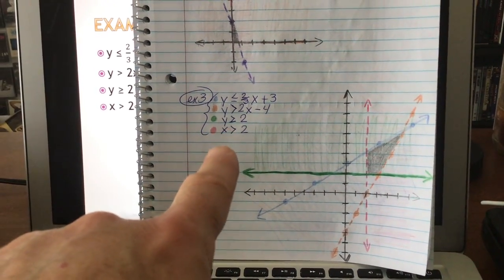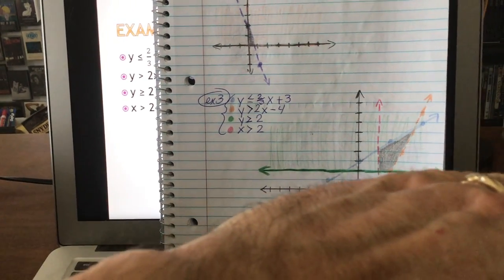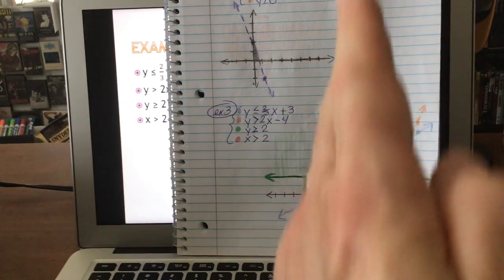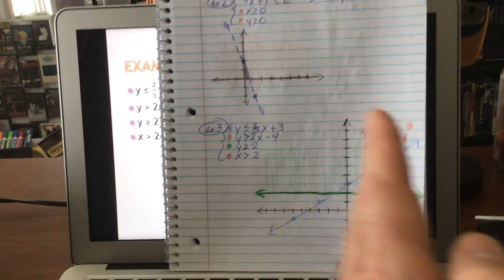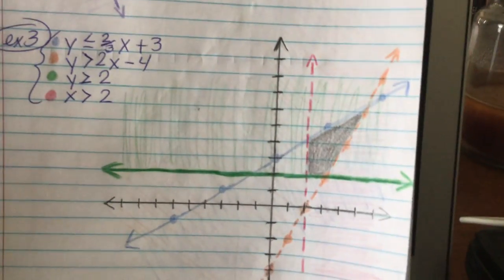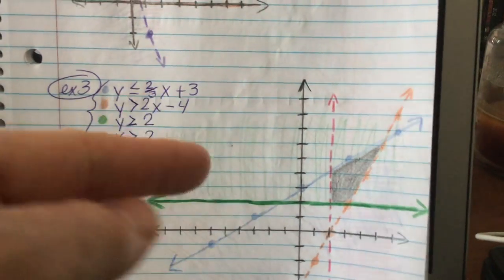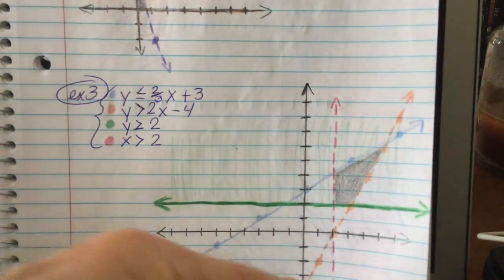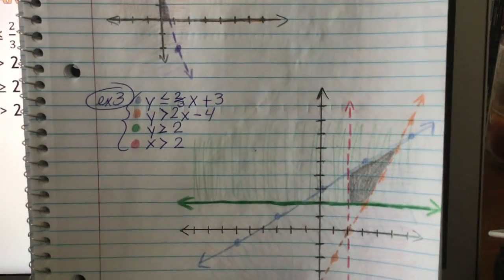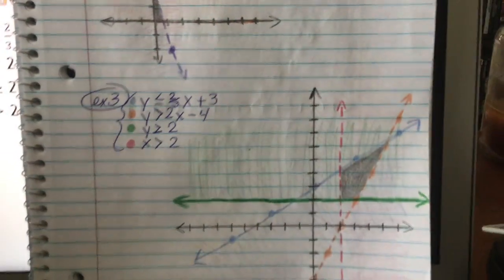Then we have our two horizontal lines. This time it's Y is greater than or equal to two and X is greater than two. So Y is greater than or equal to two is a solid green line shaded above. X is just greater than two is a dotted red line shaded to the right. So we have four regions here and you can kind of see where they all overlap to the right and above of the orange, to the right and below of the blue, to the right of the red and above the green is that little black super shaded quadrilateral area down in here.